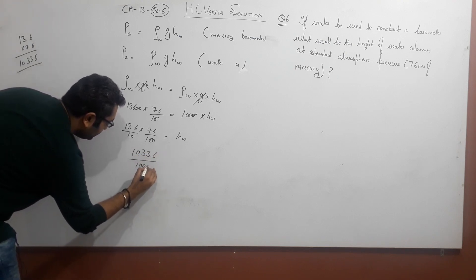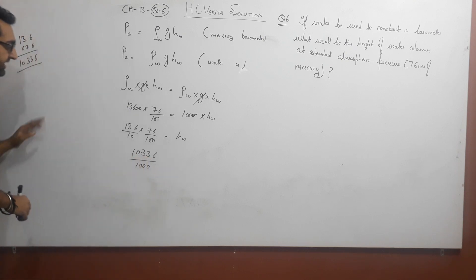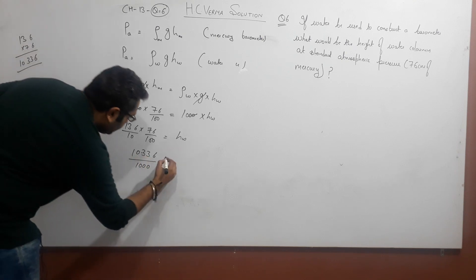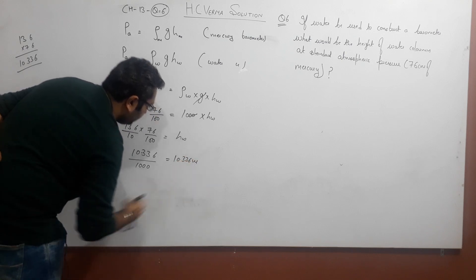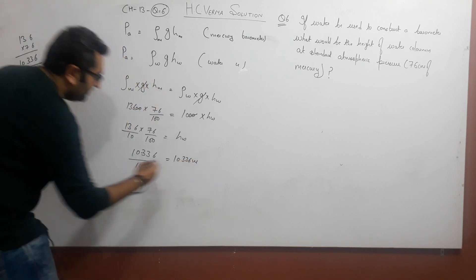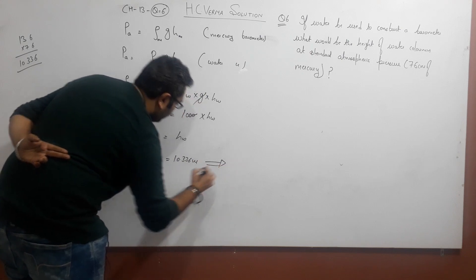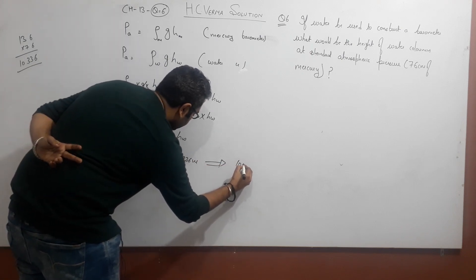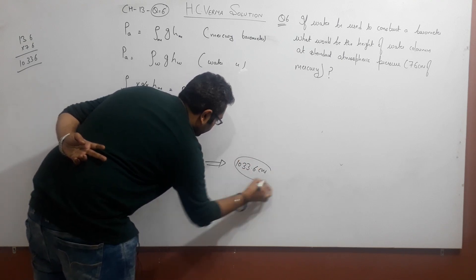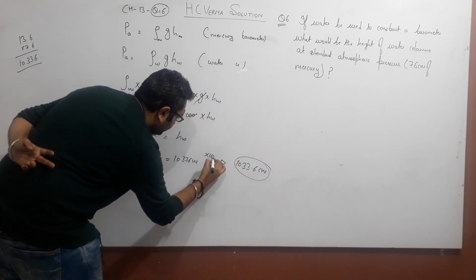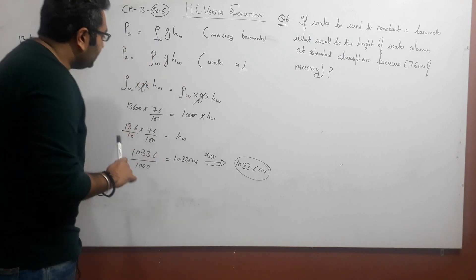Divided by 1000, so basically what we get here is 10.336 meters. If I convert it to centimeters, it will be 1033.6 centimeters by multiplying with 100. So my answer is that when we have water in the barometer...